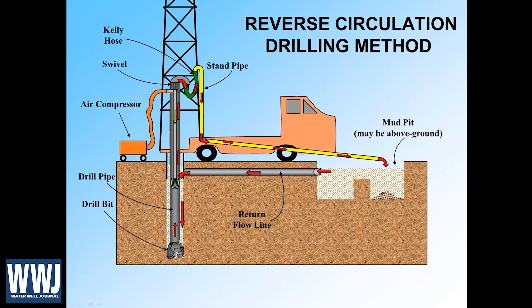Typically, we advance the borehole with one size drill bit — maybe between 15 and 17½ inches diameter. We can then come in with a reamer and widen the borehole to its final diameter for completion of a well, which might be between a 12-inch and up to 20-inch diameter casing when we're done. The borehole itself may be over 2 feet in diameter.